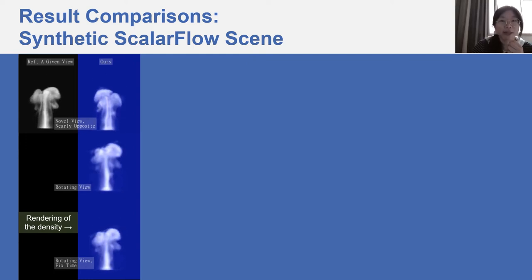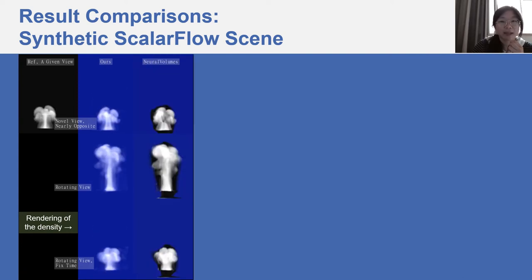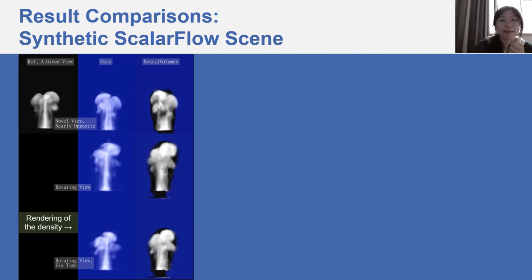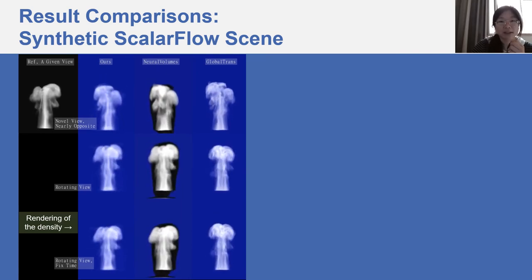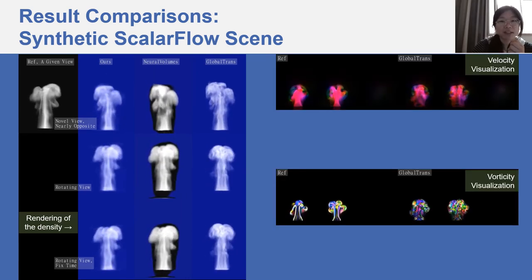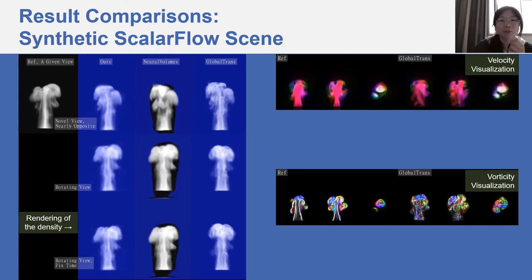Here, we show results in novel and rotating views. In the result of neural volumes, we see the ghost density artifact. Overfitting to sparse given views, neural volumes generates black smoke around which should be empty and transparent regions. The last column shows the result of the global transport method. It contains a lot of high-frequency noise. The noise is more visible in the velocity and vorticity, which are visualized on the top and bottom respectively.